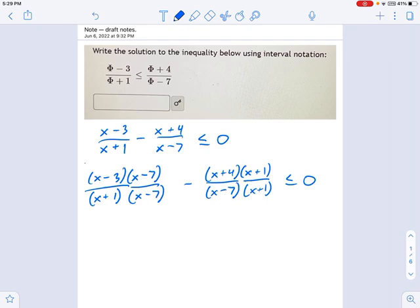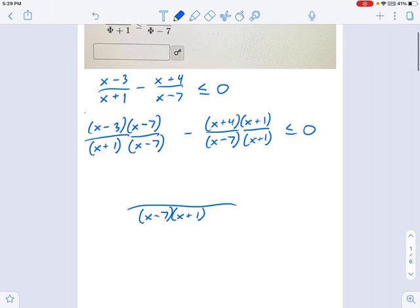So now we just simplify this and we'll see what we get. I know what the denominator is. That's x minus 7, x plus 1. The numerator is going to be a little more work. I'm going to focus on just this part. That's going to be x squared minus 10x plus 21.